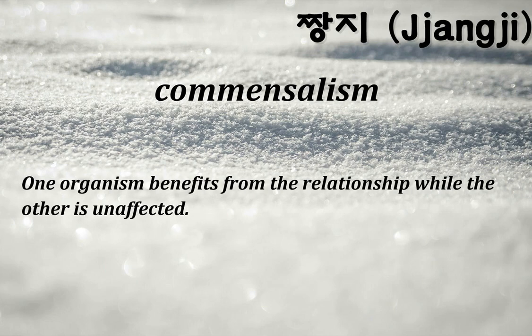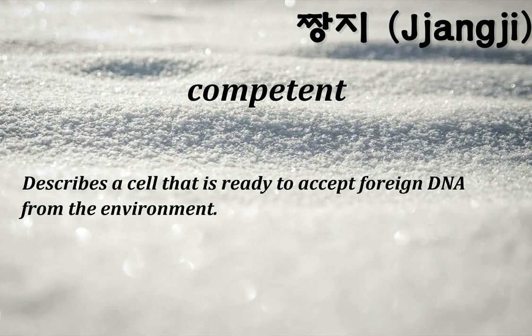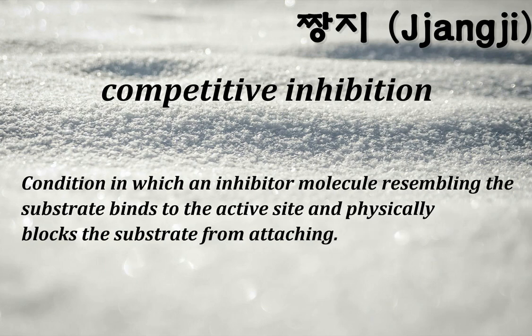Commensalism: one organism benefits from the relationship while the other is unaffected. Community: a collection of populations of species in a given geographic area. Competent: describes a cell that is ready to accept foreign DNA from the environment. Competition: both species involved are harmed by this kind of interaction; the two major forms are interspecific and intraspecific competition. Competitive inhibition: condition in which an inhibitor molecule resembling the substrate binds to the active site and physically blocks the substrate from attaching.